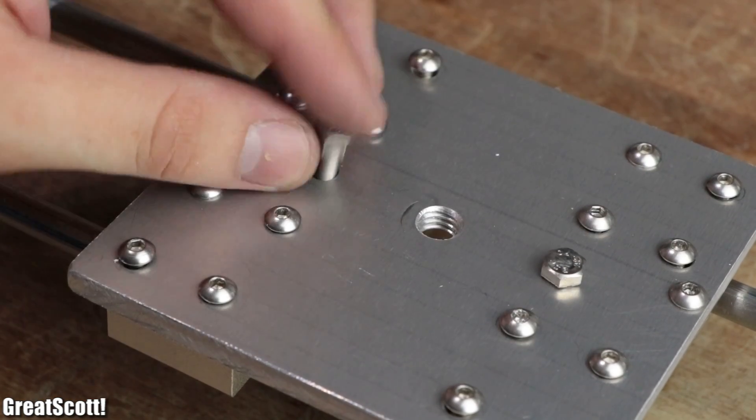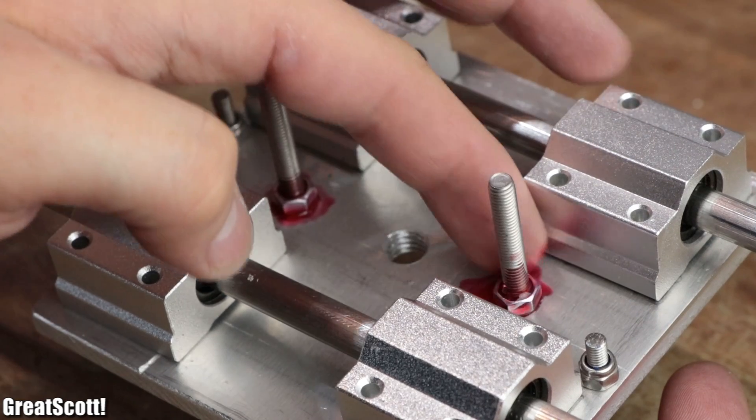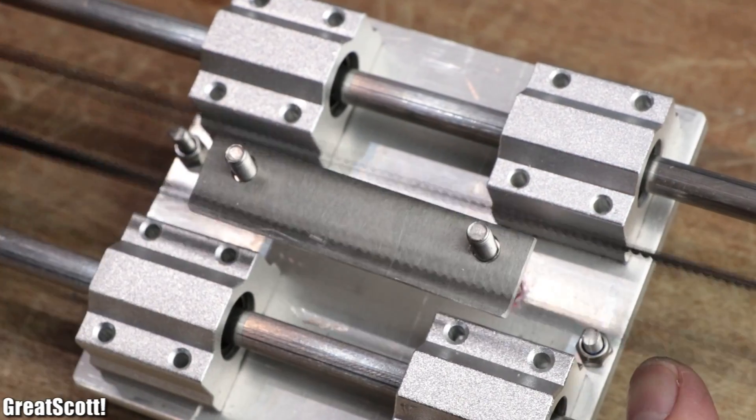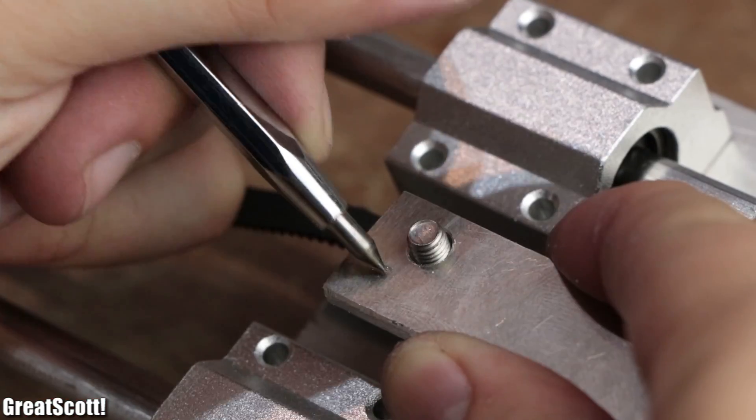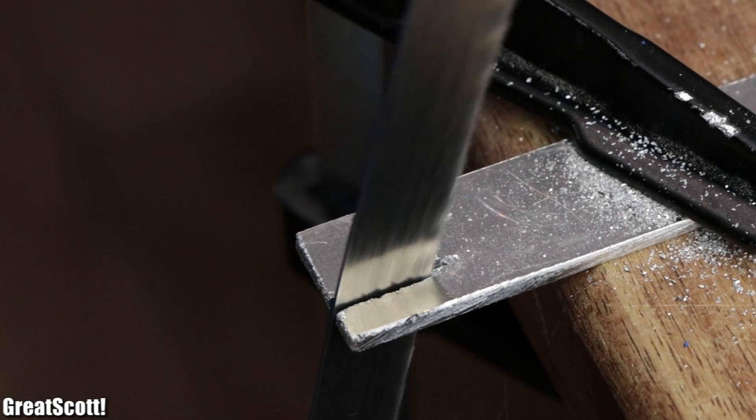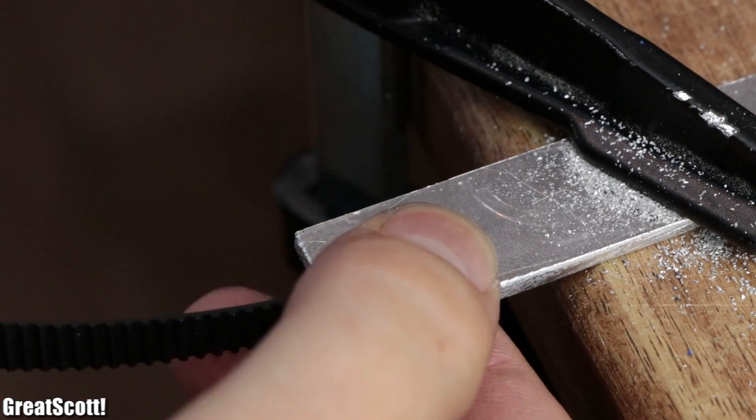Next, I secured two 40 millimeter long M5 bolts to the platform with nuts and a bit of Loctite. I placed the small aluminum piece onto them and marked the spots where the timing belt would collide with the metal. I used those markings as a reference to create slits with my metal saw in which the timing belt would fit snugly.